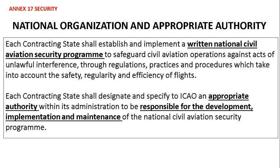National organization and appropriate authority: each contracting state shall establish and implement a written national civil aviation security program to safeguard civil aviation operations against acts of unlawful interference through regulations, practices, and procedures. Each contracting state shall designate and specify to ICAO an appropriate authority within its administration which will be responsible for the development, implementation, and maintenance of the national civil aviation security program.